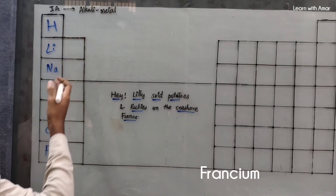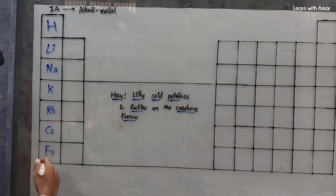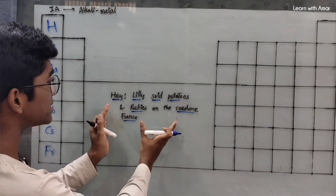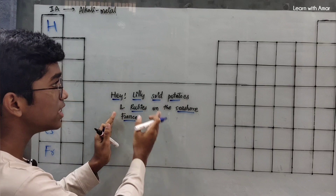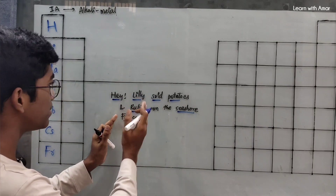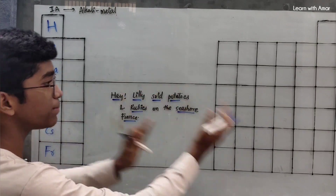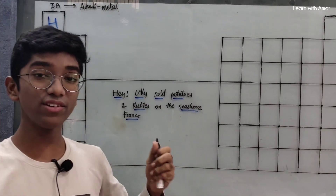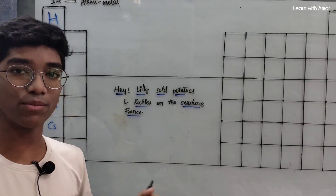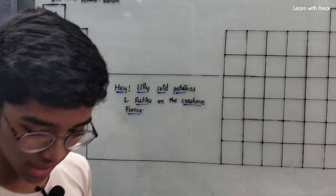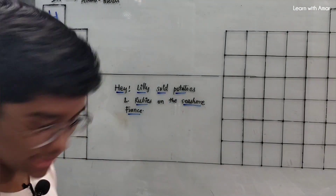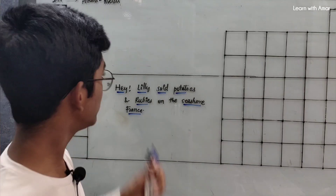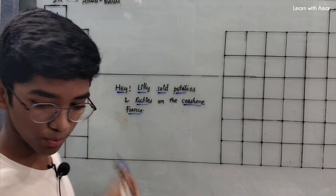So the elements in Group 1A are: Hydrogen, Lithium, Sodium, Potassium, Rubidium, Cesium, and Francium — all present in order in this sentence. Similarly, for S block and P block, if we remember these sentences or phrases then we will easily remember all the elements in them. This is the trick for the first group.